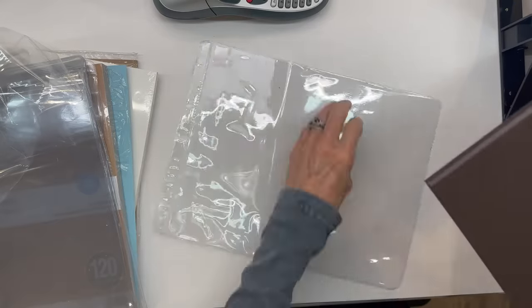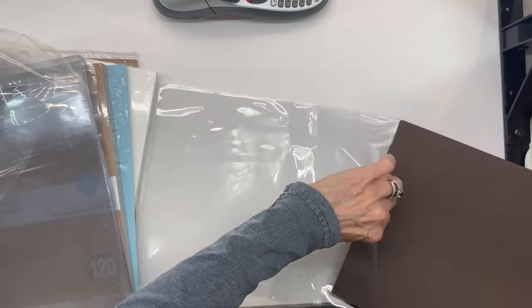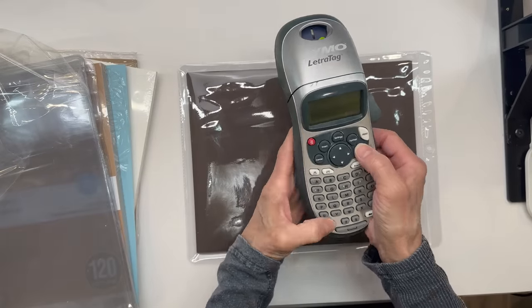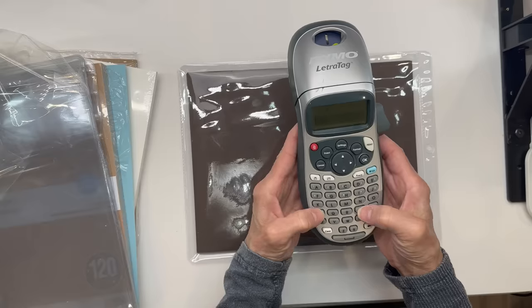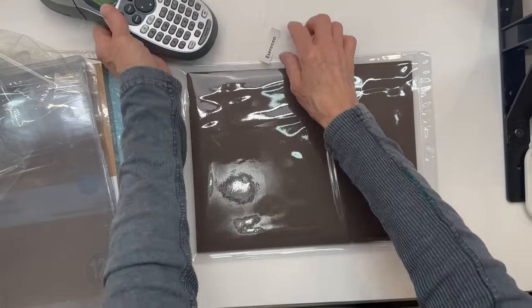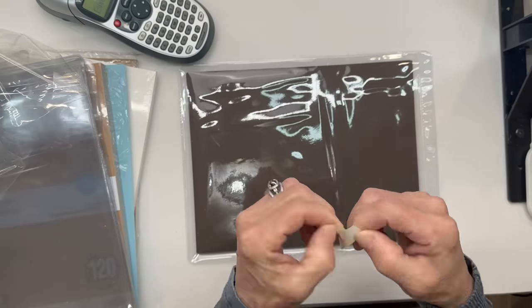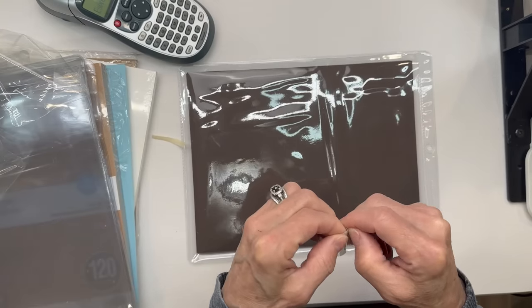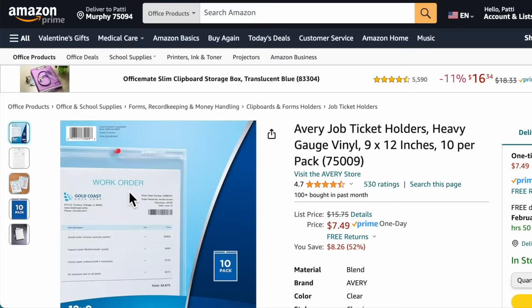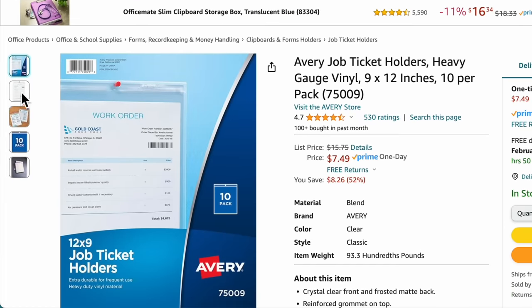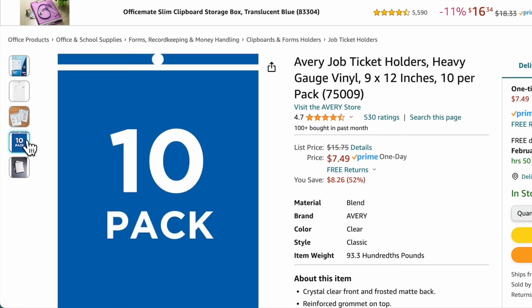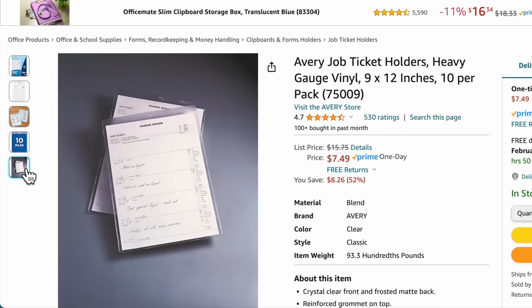To store my 8.5 by 11 cardstock I got these job ticket holders from Amazon. They're real thick vinyl and I'm going to label each one of them the color of the cardstock that I'm using. If you want to just put brown that's great but I bought these at Stampin' Up so I'm labeling them with the correct color. You can use these over and over again because they're real heavy vinyl. You get a pack of 10 from Amazon for around $7.49, but if you go to the office supply you can usually get them in the $5 range.